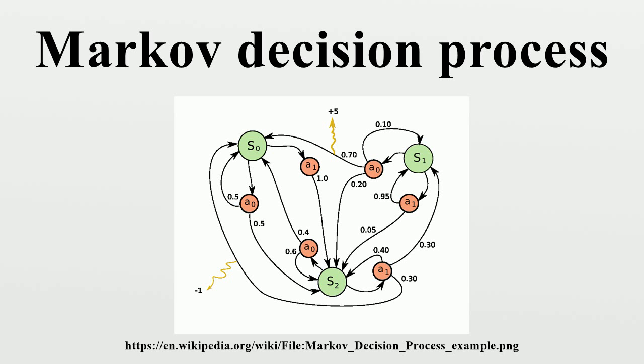Their order depends on the variant of the algorithm. One can do them for all states at once or state by state, and more often to some states than others. As long as no state is permanently excluded from either of the steps, the algorithm will eventually arrive at the correct solution.